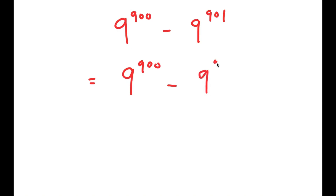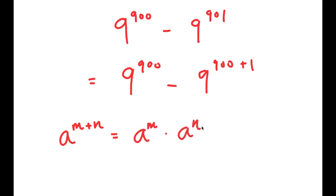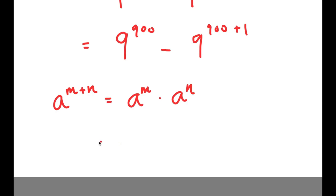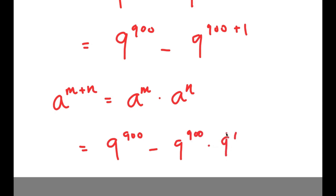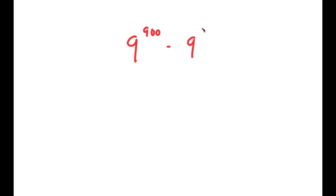I'm going to rewrite 9^901 as 9 to the power of 900 plus 1. Now I can use the exponential property: a to the power of m plus n is equal to a^m times a^n. So I get 9^900 minus 9^900 times 9^1.